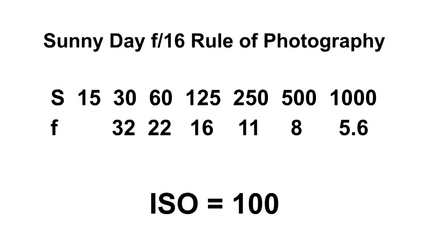This slide shows a set of shutter speeds and F-stops, and we are using ISO 100. Here is the start setting: you set your F-stop at F-16 and your shutter speed to 1/125th of a second.